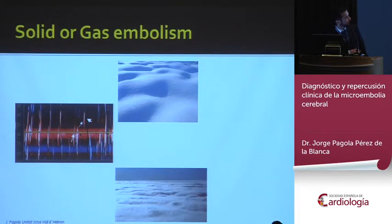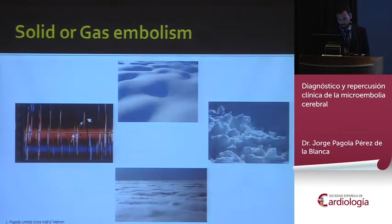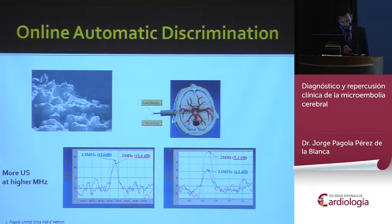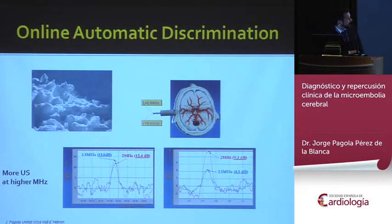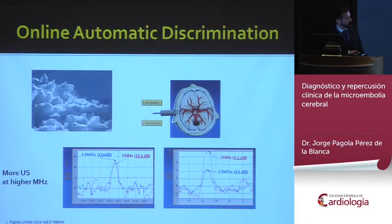Sometimes it is not easy to differentiate a solid microembolism from a gaseous microembolism. However, we can use an online automatic discriminator such as the multi-frequency PW mode Doppler, because at higher frequency solid microembolisms reflect more ultrasound. At 2.5 MHz, solid microembolisms show 3 dB and gaseous microembolisms show 4.5 dB, so the distinction becomes clear.